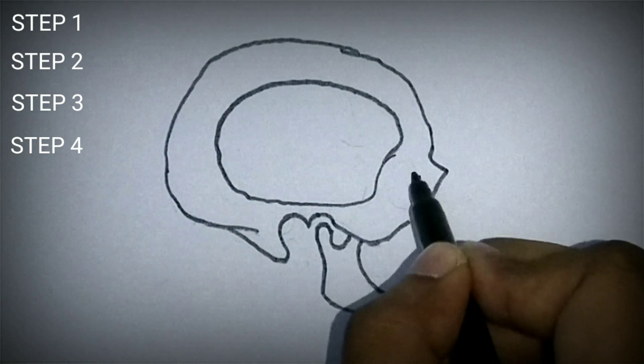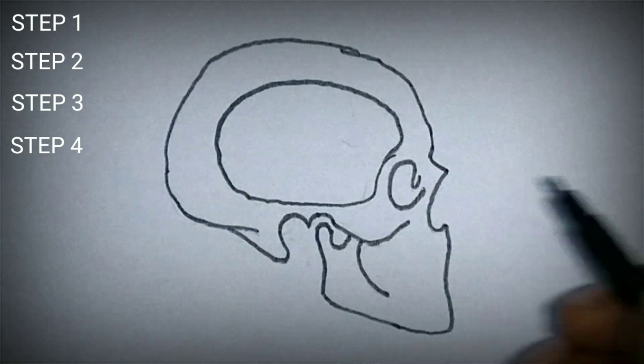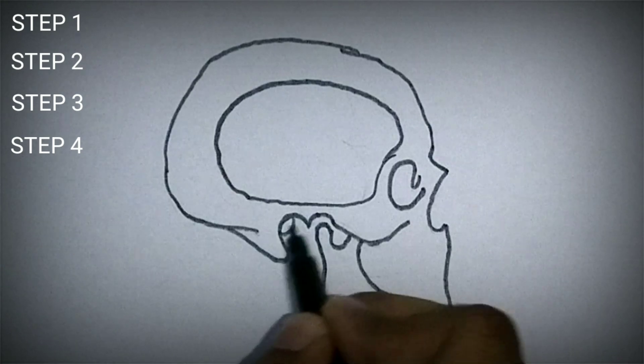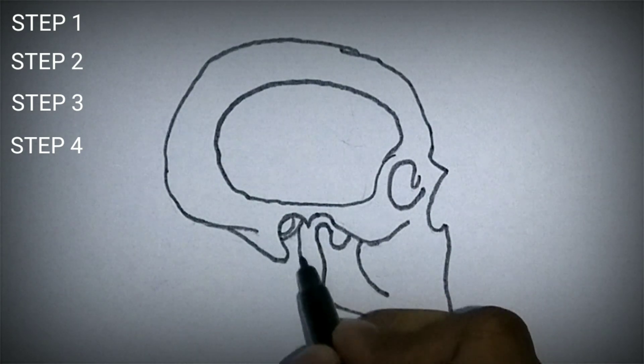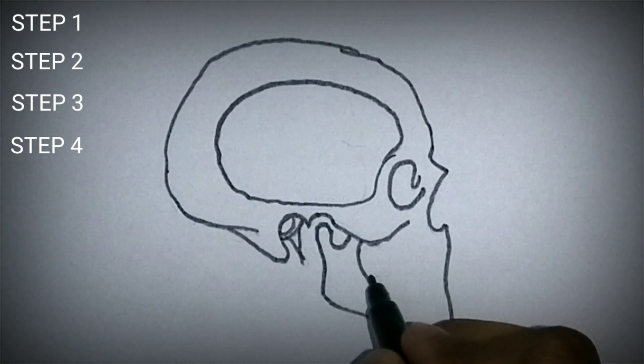Let us complete our diagram by adding details to it. The orbit, external auditory meatus, the styloid process and tooth.